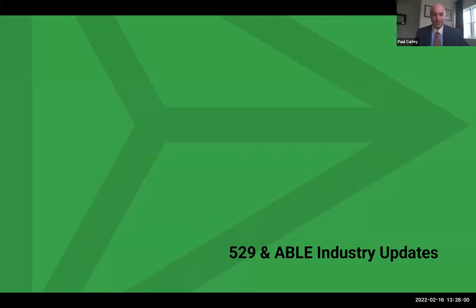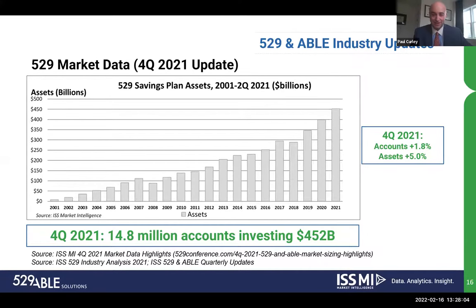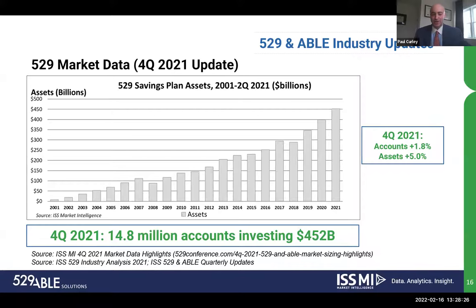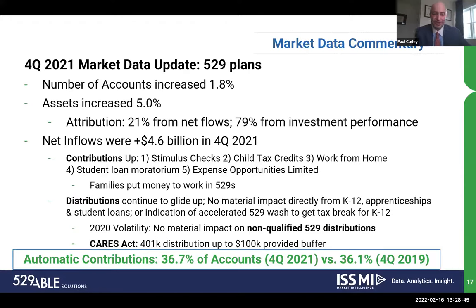Moving to the 529 and ABLE industry updates: broadly speaking over the long term, we've seen assets increase steadily. This update focuses on Q4 2021, where accounts increased 1.8% — robust growth from an accounts perspective. Assets also increased 5%, and as of end of 2021 there are 14.8 million accounts investing $452 billion in assets. Great momentum. Of that 5% increase in assets, 21% came from net flows and 79% came from investment performance.